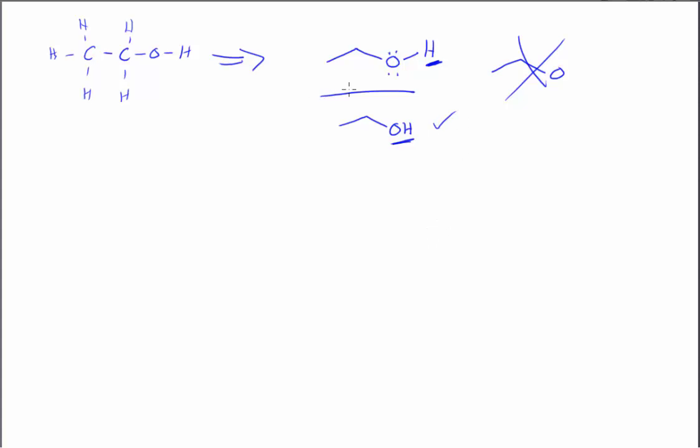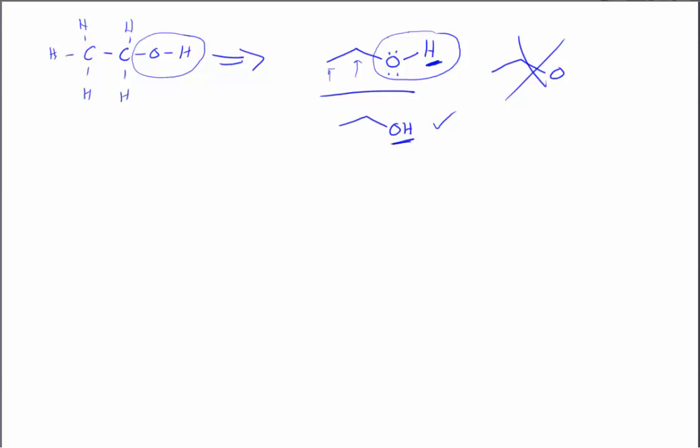So what is the use of these skeletal line structures? Well, not only are they quicker to draw, I hope I've convinced you of that over the past few minutes, but also they make it easier to identify functional groups. It is obvious on ethanol that the OH is different from the rest of the molecule, especially when I have just these lines over here.